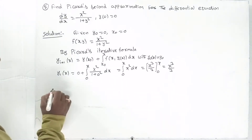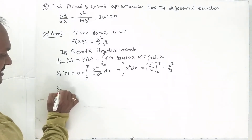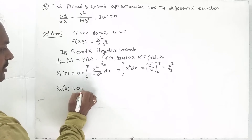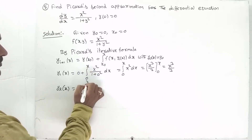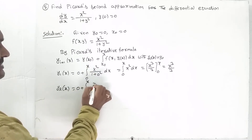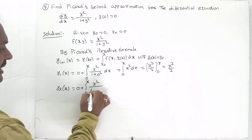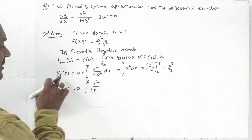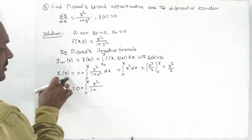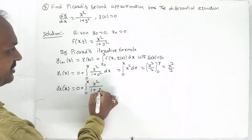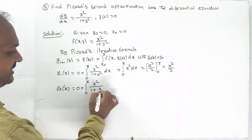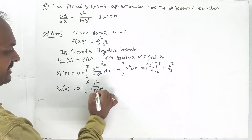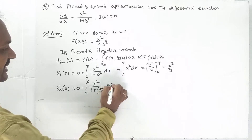Second approximation: y₂ of x equal to 0 plus integral from 0 to x of x squared by 1 plus y₁ of x squared into dx. Substitute y₁ of x, which is x cubed by 3, into dx.